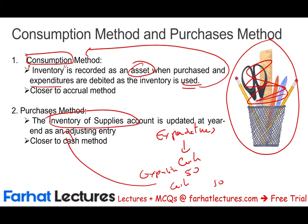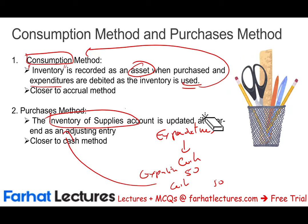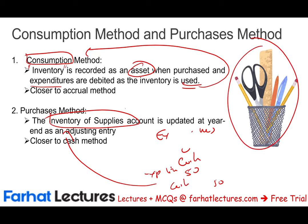Under the consumption method, if we purchase $50,000 worth of supplies, we first record it as supplies inventory — debit supplies inventory $50, credit cash $50. Then at the end of the year, we adjust the inventory account to bring it up to date. The best way to understand this is to look at an example.